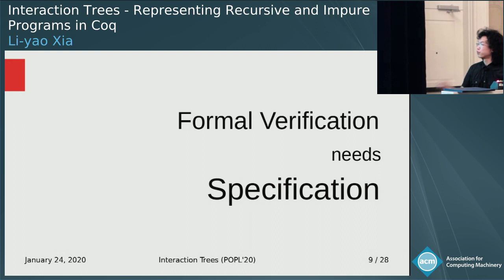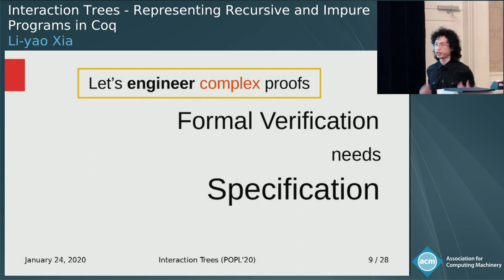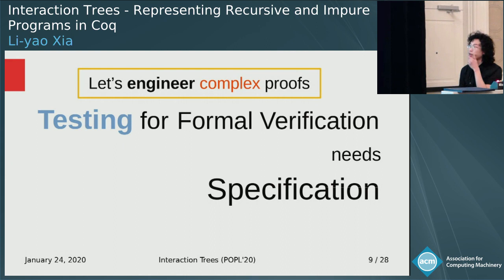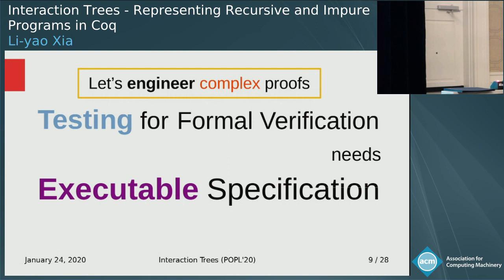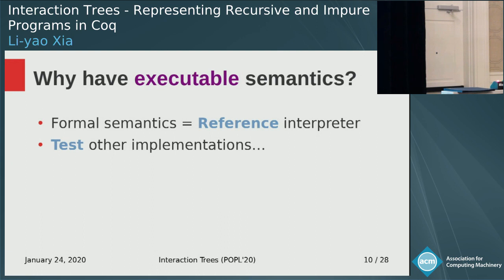When you verify a program, you need to verify with respect to some specification. But if your specification is complex, you need to have an engineering approach to verifying your program. One way to do that is to use testing — you look at small parts of your specification and try to see whether that makes sense. For that, you need to be able to run your specification. So if you had an executable semantics, then your formal semantics is the reference interpreter of your language. You wouldn't have to have these two as separate artifacts, and you could test other implementations, compilers, or interpreters.